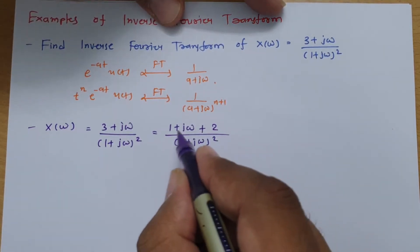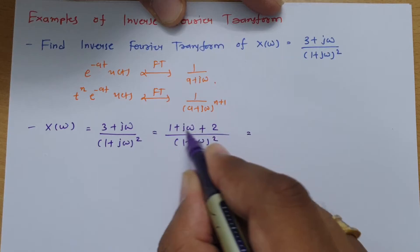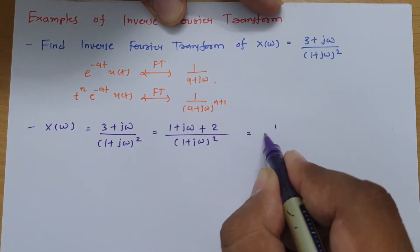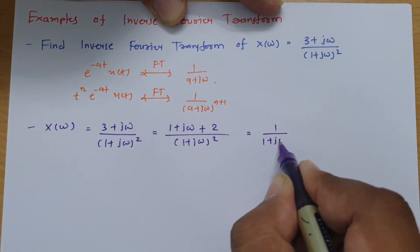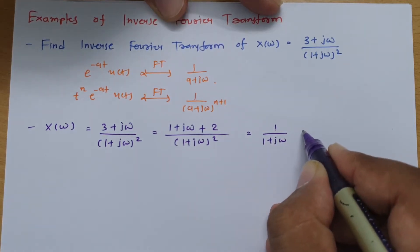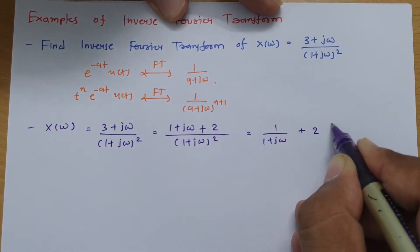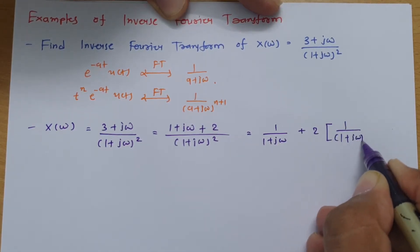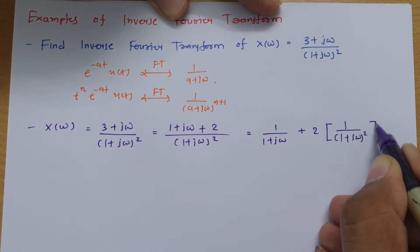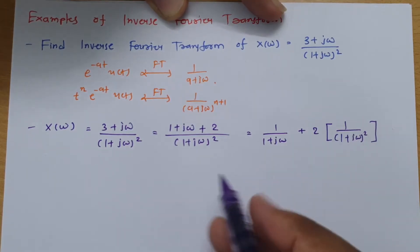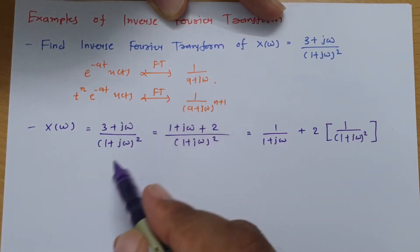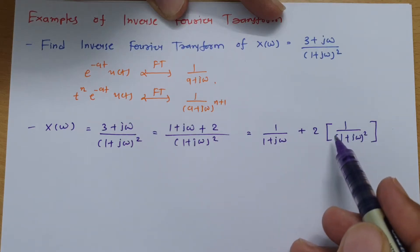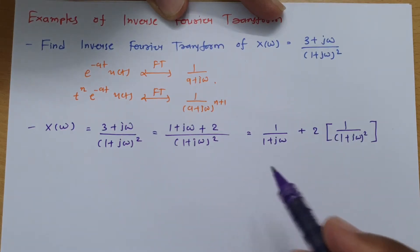Separating the two terms: (1 + jΩ)/(1 + jΩ)² + 2/(1 + jΩ)² = 1/(1 + jΩ) + 2 · 1/(1 + jΩ)². Now we have expressions that match our ready-made formulas, so we can easily apply them to get the inverse Fourier transform.